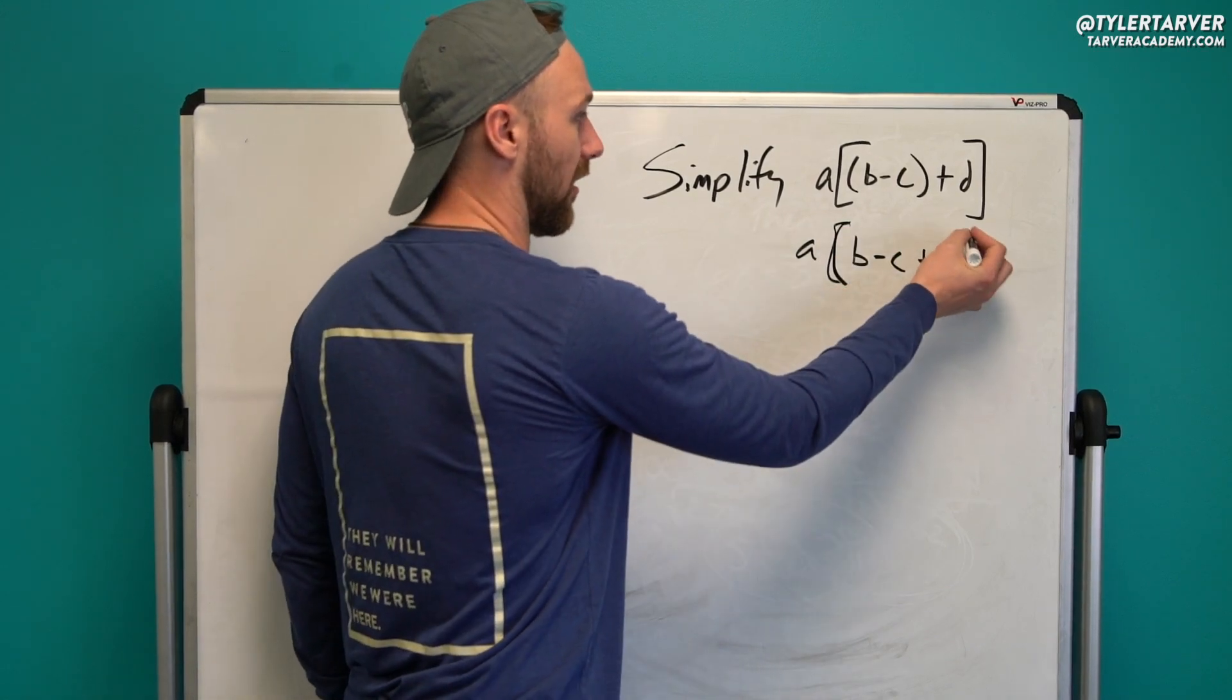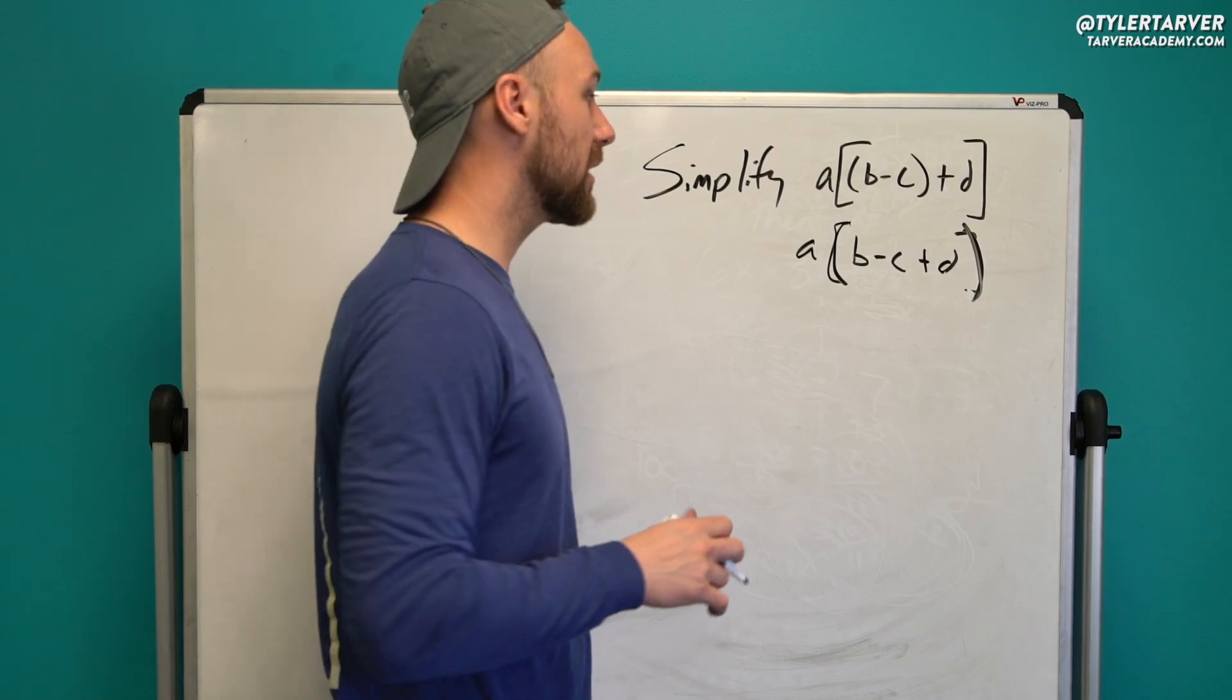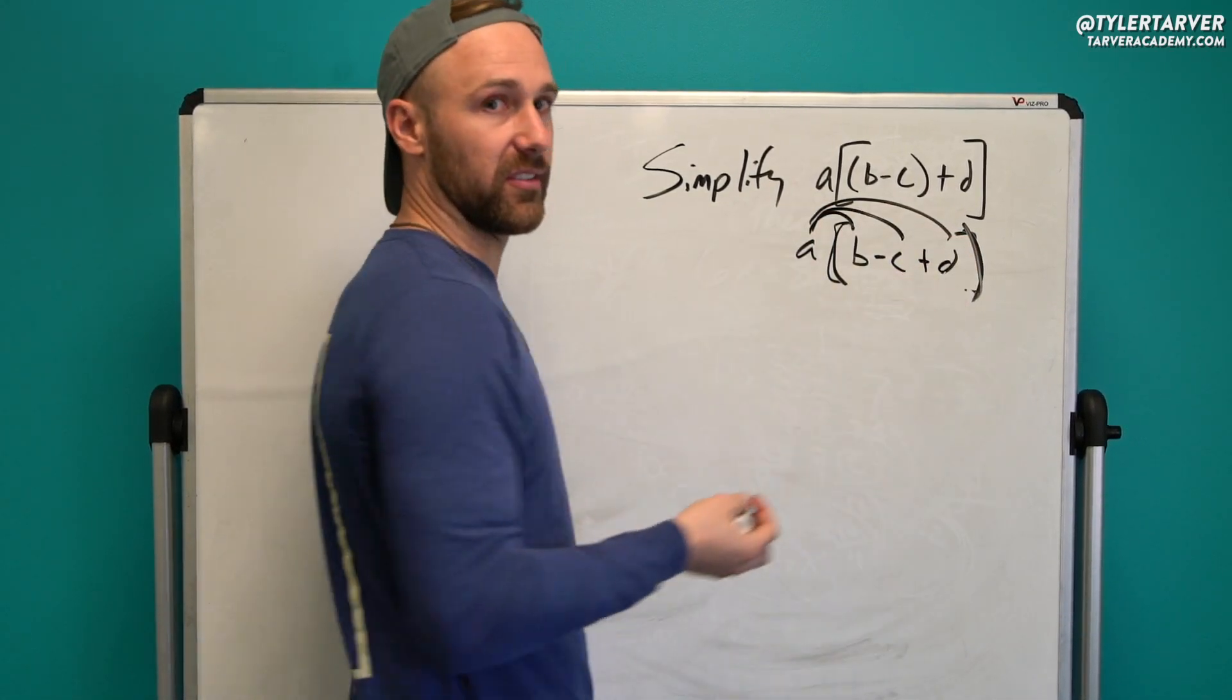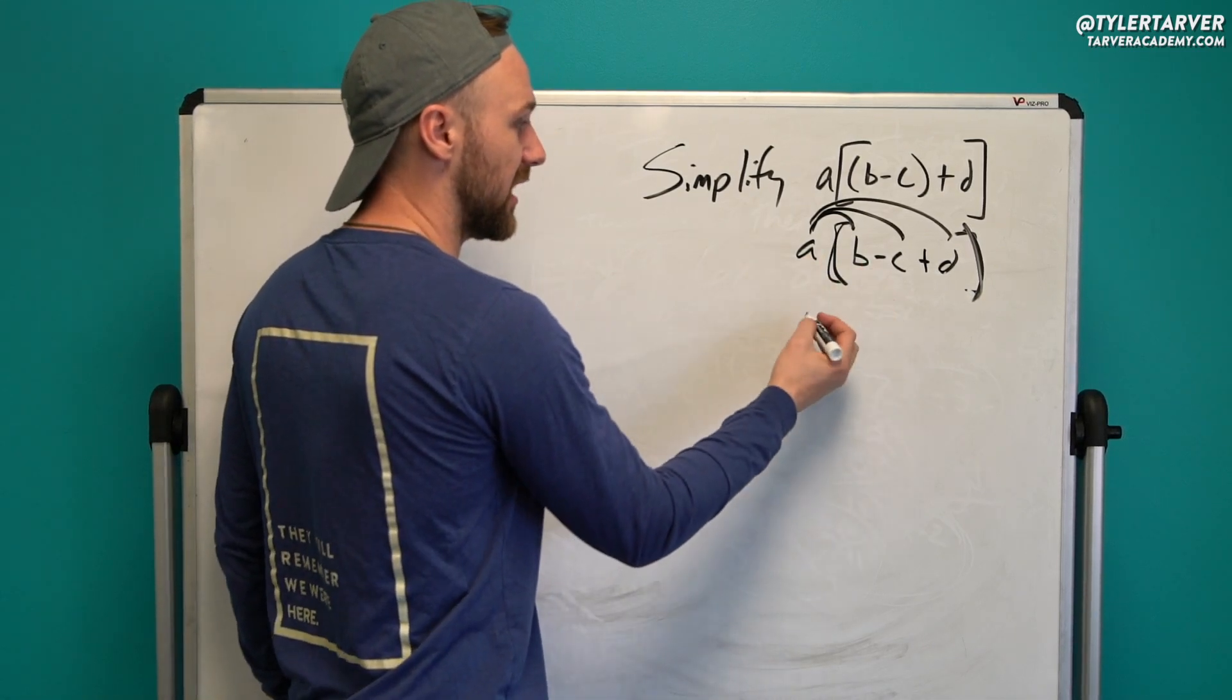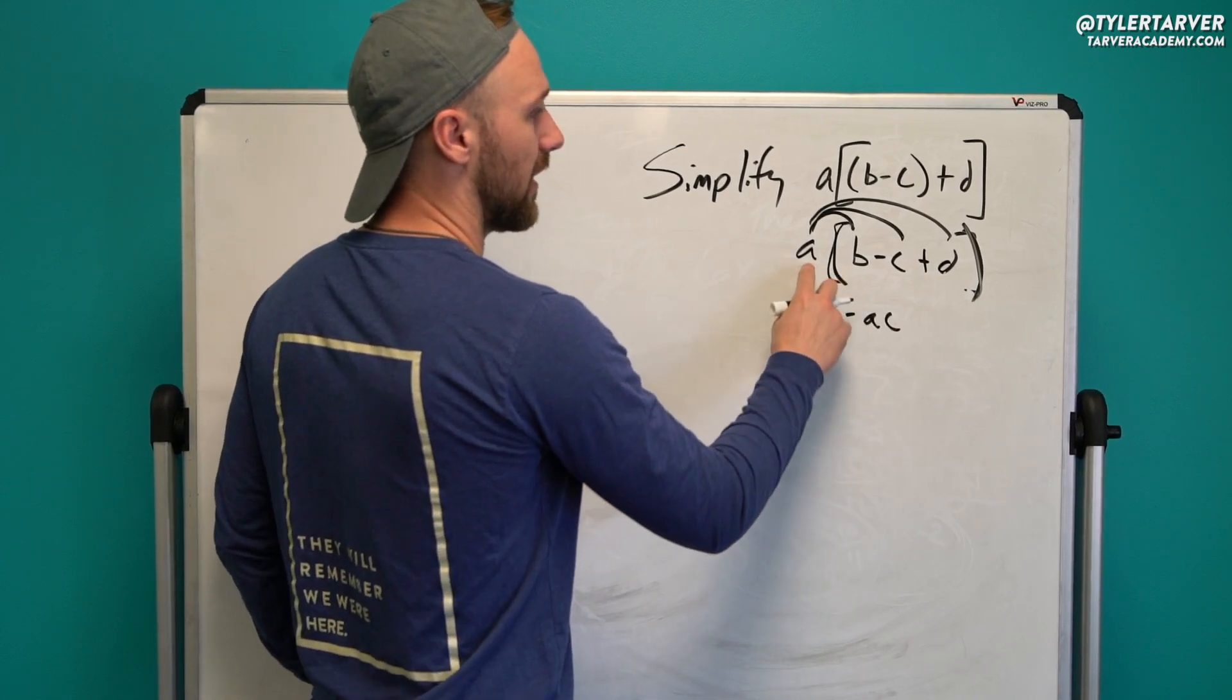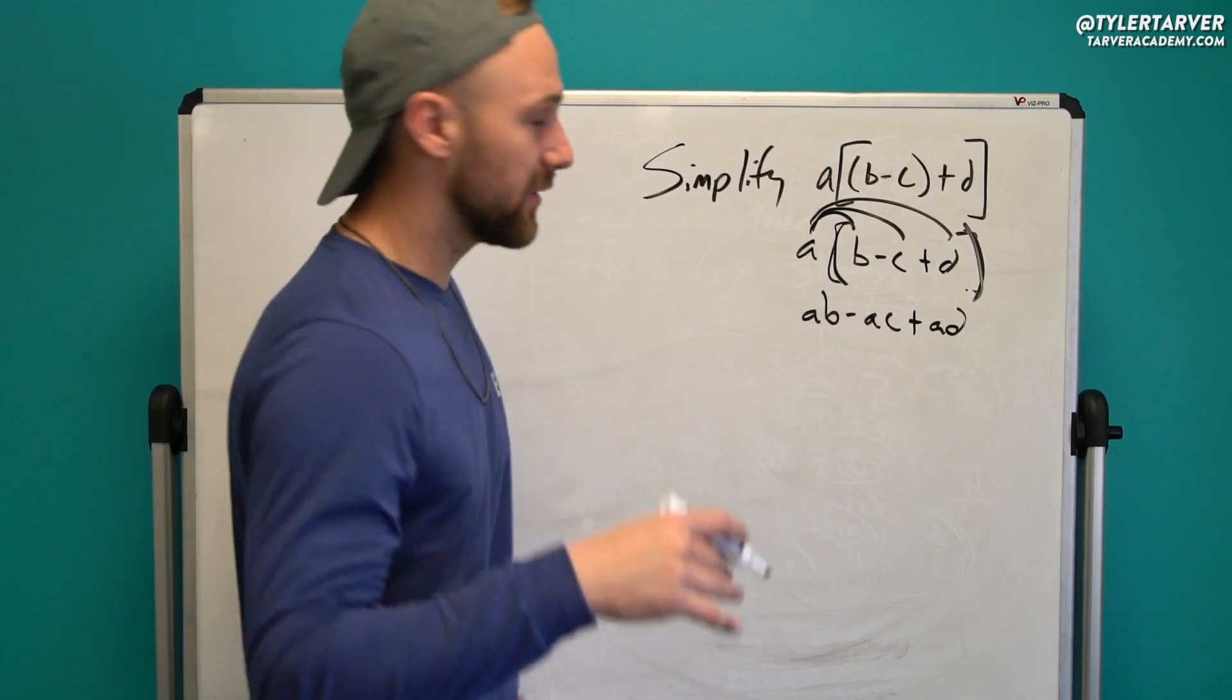So now we are at the point where rhymes with shmishmibut, they'll write, distribute. So I'm just going to distribute in there just like if that was regular parentheses. Okay, so A times B is AB. A times negative C is negative AC. And then A times D is positive AD. Anthony Davis, MVP candidate.